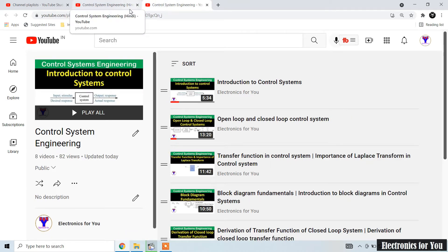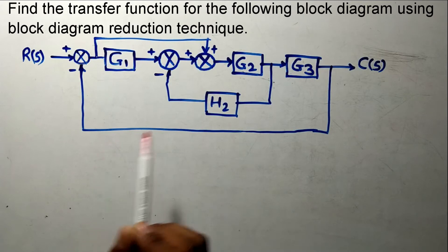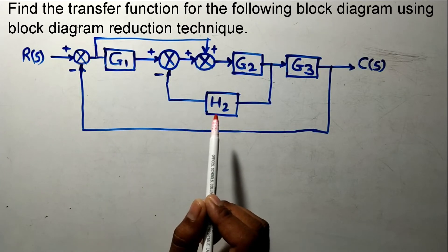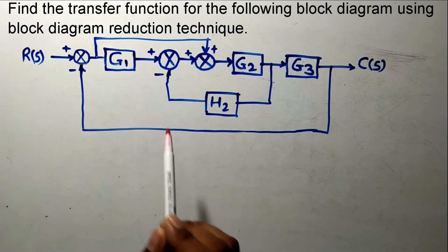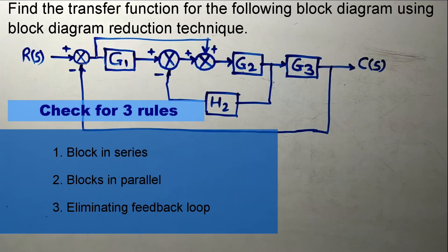This is our block diagram and we have to find the transfer function of this. When solving such block diagram problems, first we have to find out whether any one of the three rules are applicable or not. These three rules are: blocks in cascade, blocks in parallel, and a feedback loop.